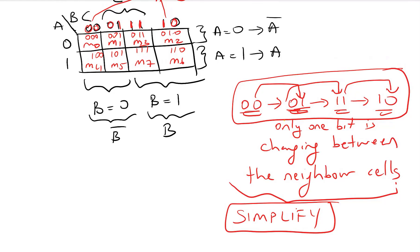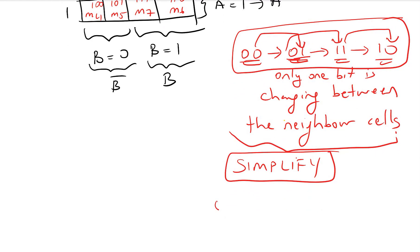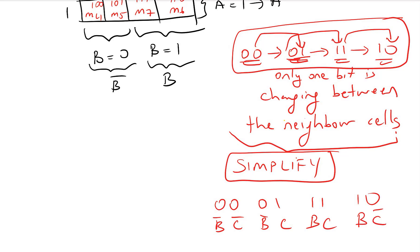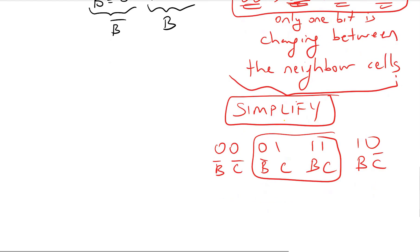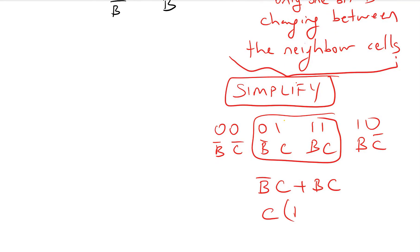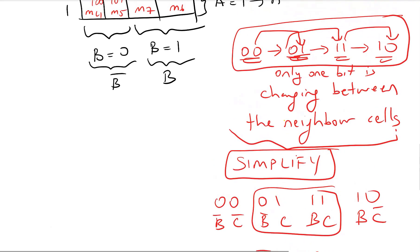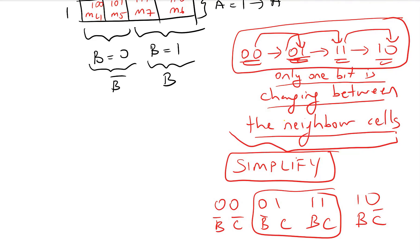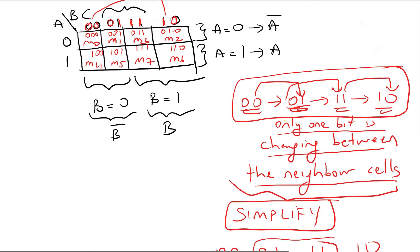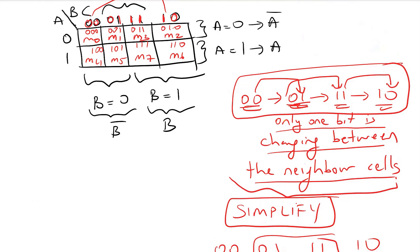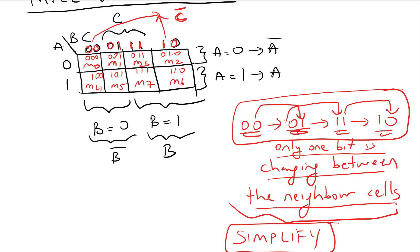By following this order we make sure only one bit changes between neighboring cells, which allows us to simplify. For example, grouping cells 00 and 01 (B-not·C-not and B-not·C) lets us factor out B-not, and the result is just B-not. This is why we must follow the Gray code order when writing our K-map — otherwise we cannot simplify.